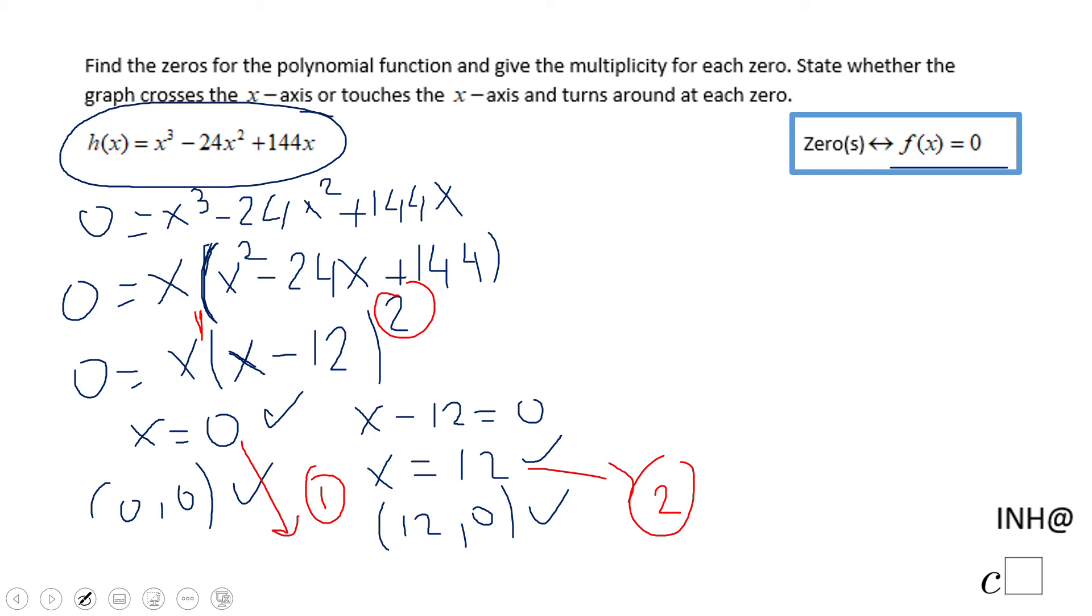crosses or touches the x-axis. If the multiplicity is an even number, like 2 in this case, it touches. If it's odd, like 1 in this case, it crosses. So at x = 0, we expect the graph to cross the x-axis. At x = 12, we expect the graph to touch and turn around because it has an even multiplicity.